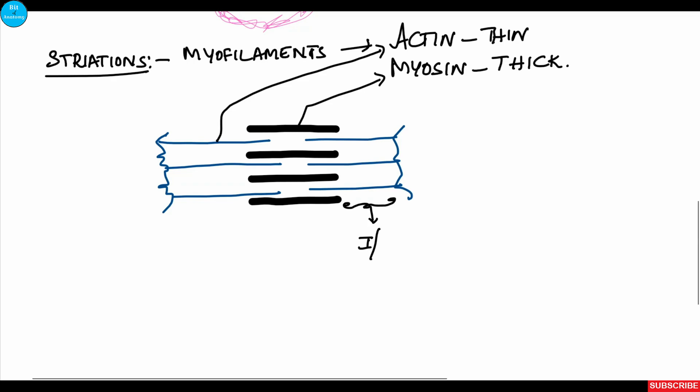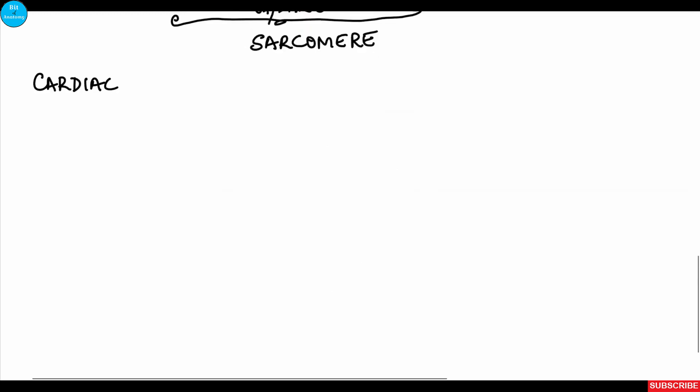The part where only actin filament is present is called the isotropic or I band (light band). The part where both actin and myosin are present is called the A band (dark band). The area between two Z lines is called a sarcomere. In the center, where only myosin filament is present, it is called the H zone.